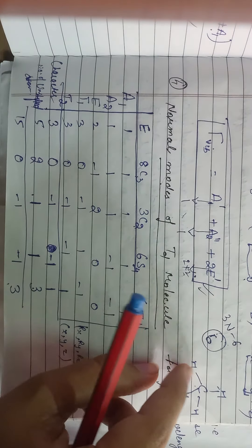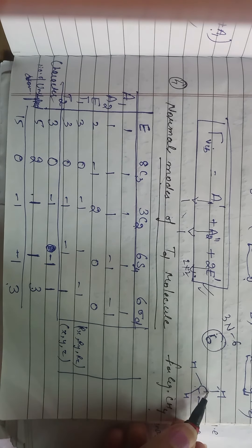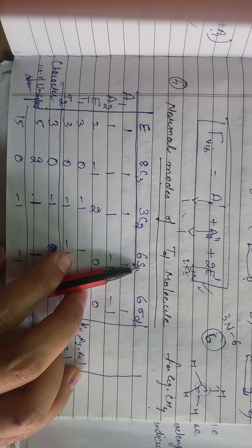BF3 ka D3H point group. Aapne phir se D3H point group ke liye character table book se copy kar liya. Unshifted atoms check karo: E ke liye 4 (sab 4 BF3 mein). C3 mein 3 fluorines ghoomenge, boron center mein rahega. C2 lagaya — boron aur fluorine mein se jayega, to 2 atoms unshifted rahenge. Sigma H aise pass kiya — charon ke charon unshifted hain. S3 mein teen fluorines ghume aur mirror mein boron wahi raha — 1. Sigma V mein: boron aur fluorine mein se dono ki image bani, yeh shift ho gaye, yeh nahi — to 2.